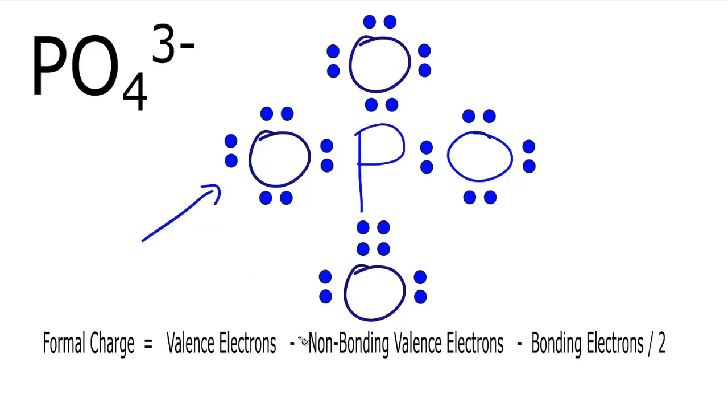Oxygen on the periodic table is in group 16, sometimes called 6A. It has six valence electrons. When we talk about non-bonding valence electrons, these are the electrons that aren't between atoms, they aren't involved in a chemical bond. If we count them up we have 2, 4, 6, so we're going to subtract 6.